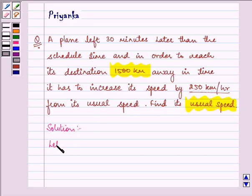Let the usual speed be equal to x km per hour. Now the distance that needs to be traveled is 1500 km.